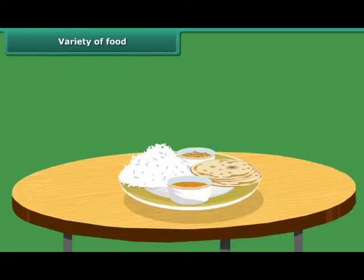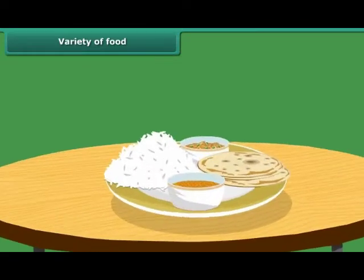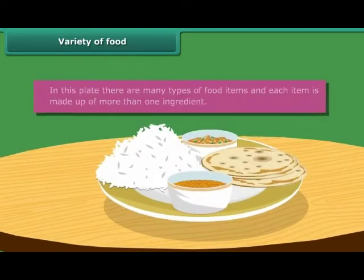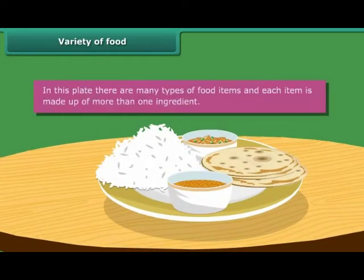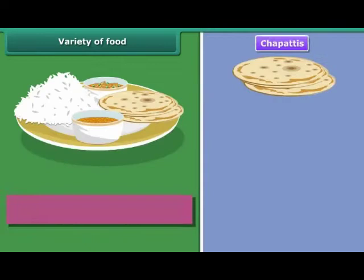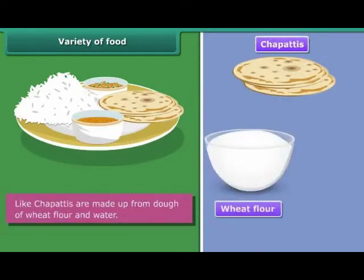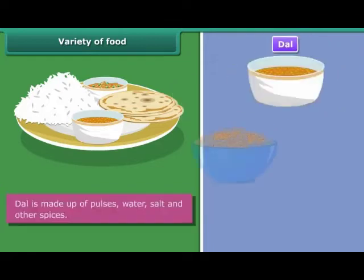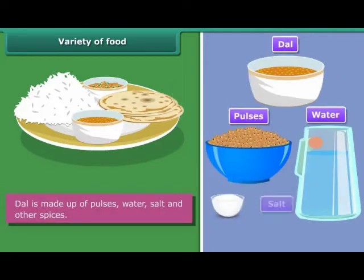Look at the food. What did you notice? In this plate, there are many types of food items and each item is made up of more than one ingredient. Like chapatis are made up from dough of wheat flour and water. Similarly, dal is made up of pulses, water, salt and other spices.